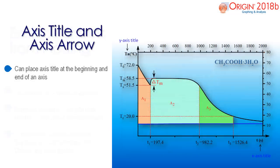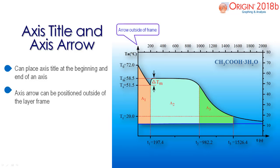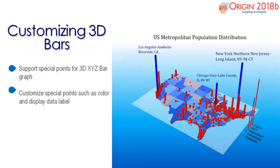Several graphing improvements have been made in Origin 2018B. One improvement includes the capability to place the axis title at the beginning or end of an axis. The axis arrow can now also be positioned outside of the layer frame. Other improvements include the capability of adding special points for a 3D XYZ bar graph so that you can customize an individual column such as color and data label.